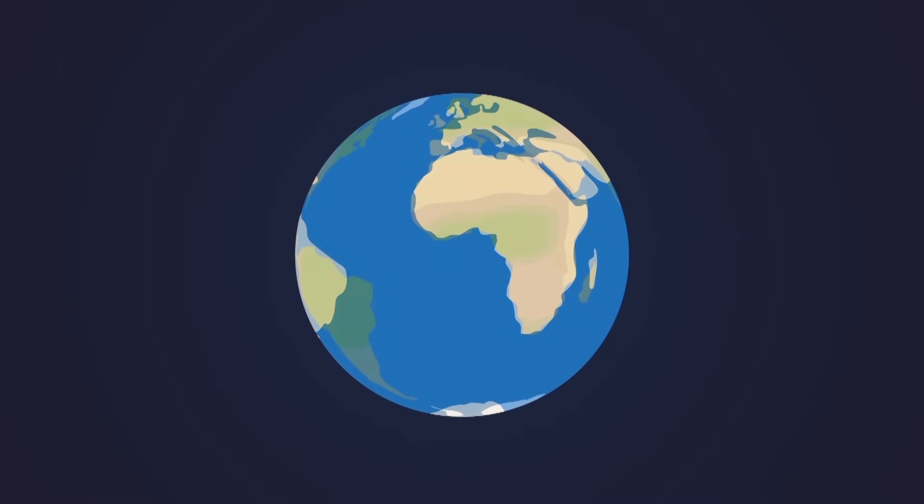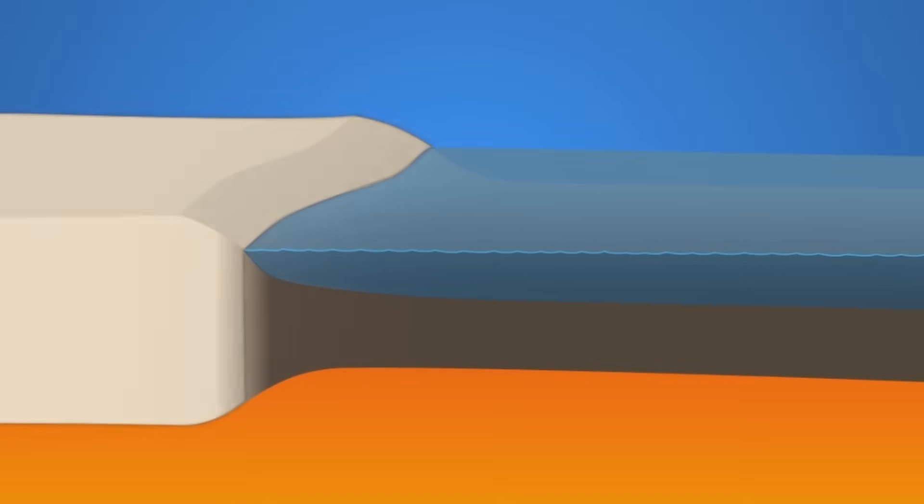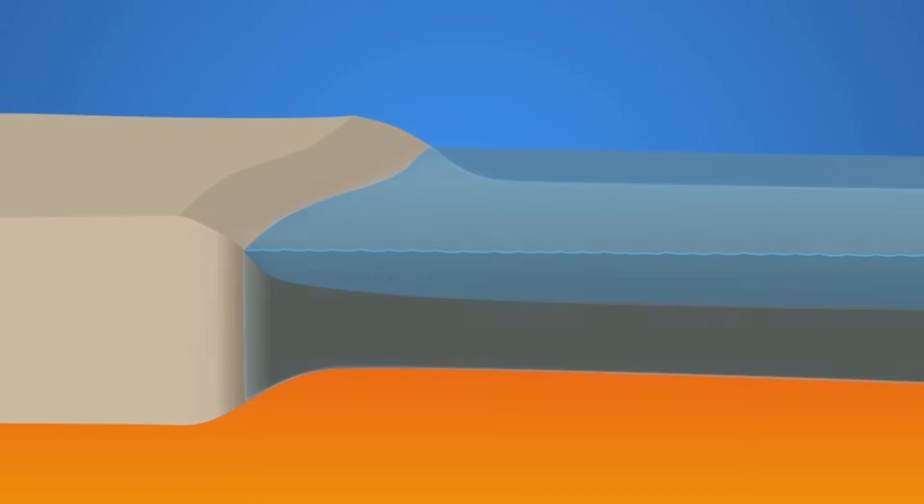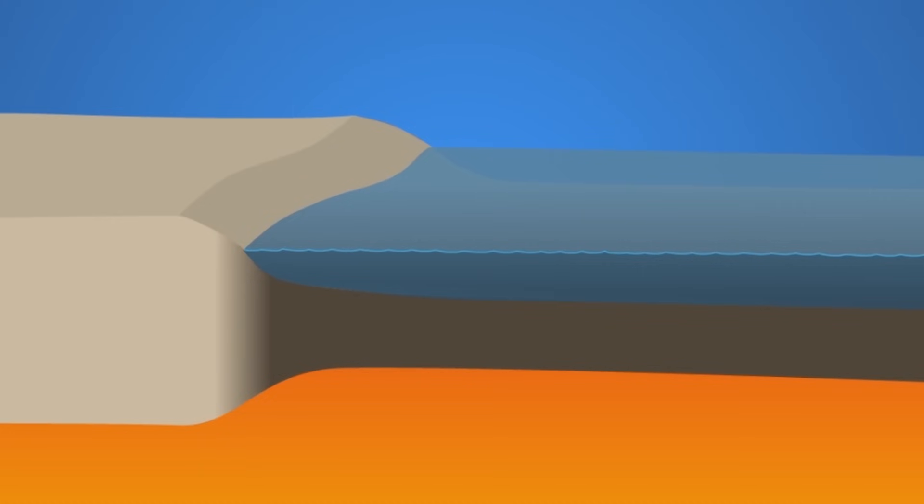Plates move slowly, as fast as growing fingernails. Continental plates form the land the continents are on. Plates that are covered with water are called oceanic plates. They are thinner and the rock is heavier.